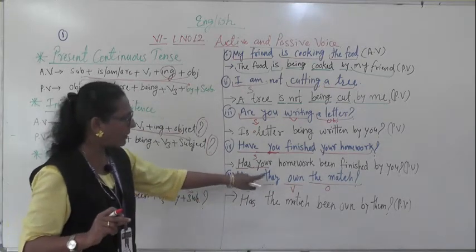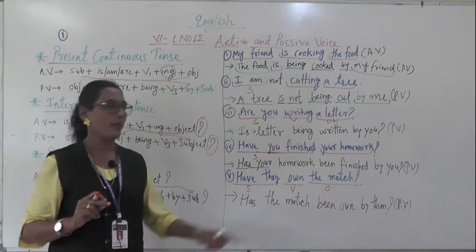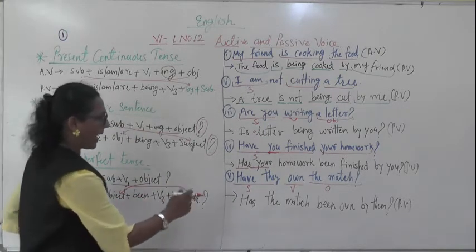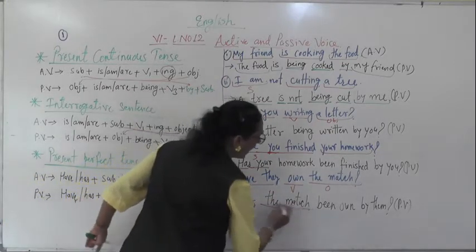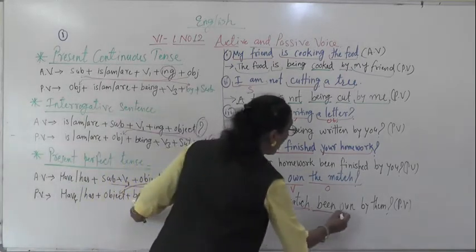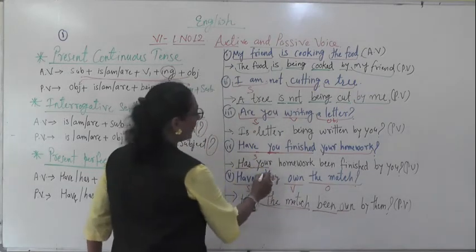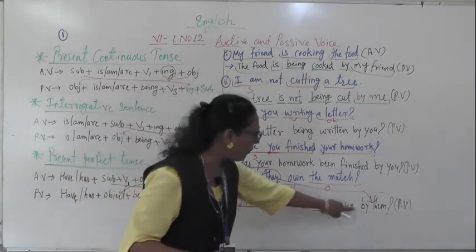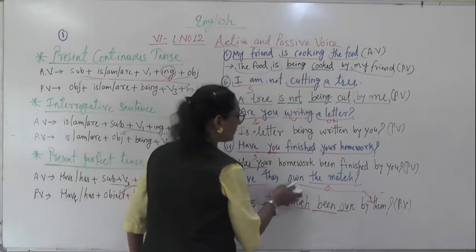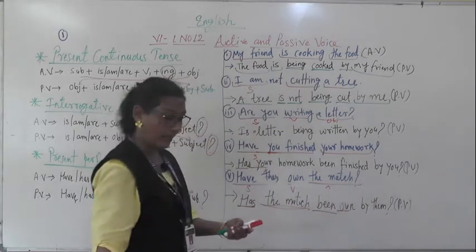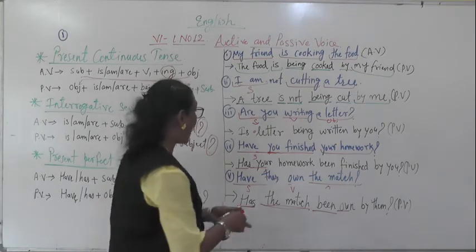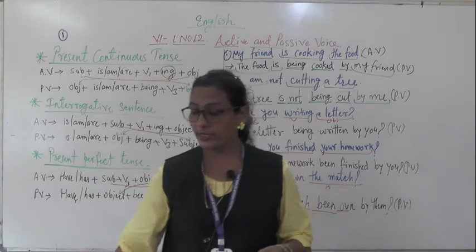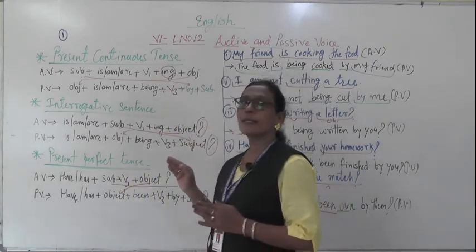Fifth example: 'Have they won the match?' Interrogative, because question mark is there. 'Have' confirms present perfect tense. Subject is 'they,' object is 'the match.' In passive, helping verb 'has' comes first, then object 'the match,' then 'been,' then V3 'won,' then 'by them' — because 'they' changes to 'them' in passive. Passive: 'Has the match been won by them?'